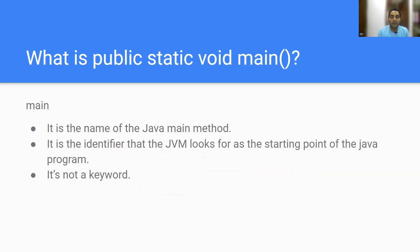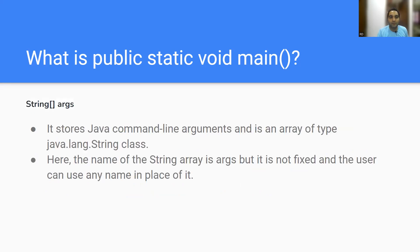Now, main is the name of the Java main method — it is not a keyword. In an interview you might get the question: is main also a keyword? The answer is no. Main is the name that JVM looks for as the starting point of the Java program. At the end you write String args — the name of the string array is 'args' but it is not fixed; the user can use any name. It is an array of type java.lang.String.